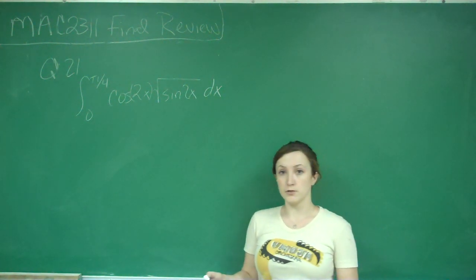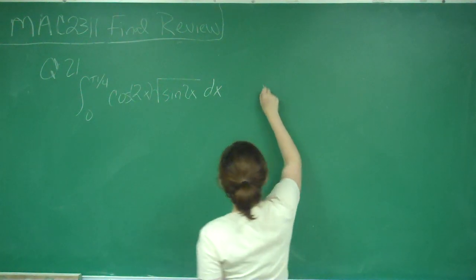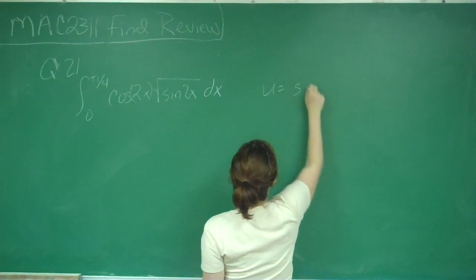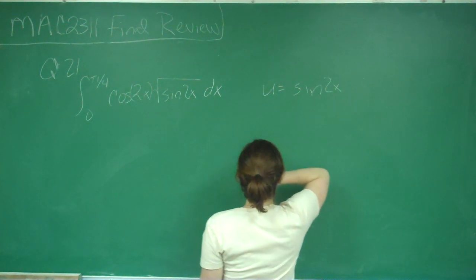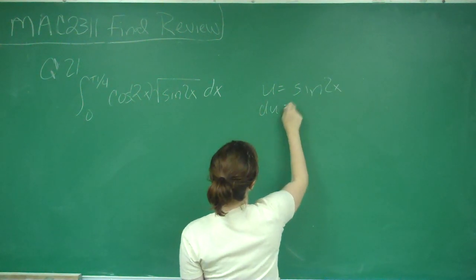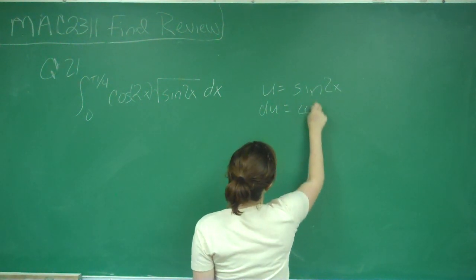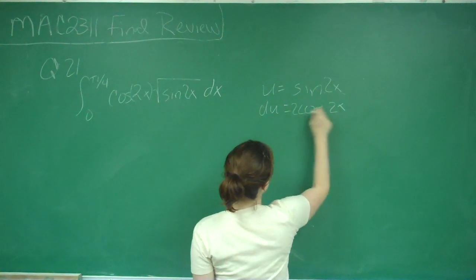And the only way that we can do this is by using u substitution. So we're going to say that u is equal to sine 2x, and therefore du is equal to cosine 2x times the derivative of the inside, which is 2.